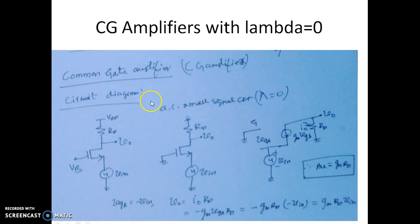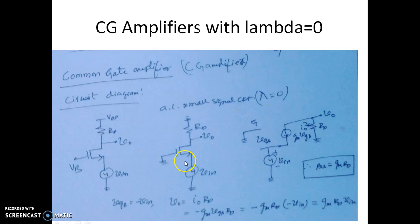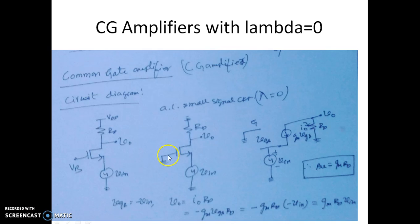In this particular amplifier we are assuming the lambda value to be 0. The gate is grounded for the AC signal, the input is applied with respect to ground, and the output V0 is measured with respect to ground. Since the gate is grounded, we call this circuit a Common Gate Amplifier.